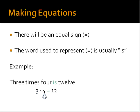Three times four, and the is is the equal sign, 12. That's the main difference between expressions and equations. When we're writing equations, it's going to have an equal sign. And you'll have numbers and variables or a combination of both on either side of that equal sign.